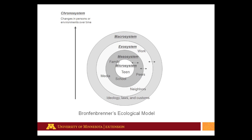The chrono system, which you can see on the left side of the figure, represents change over time. An ecological framework is not static, but rather a product of the individual, the family, and the culture and historical time in which they're living and growing. You'll also notice that there are bi-directional arrows that cut across each of these systems, recognizing that these system levels of influence do not act independently of one another.